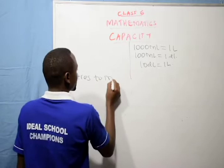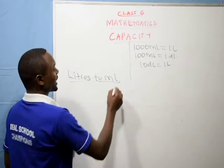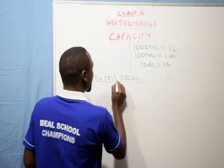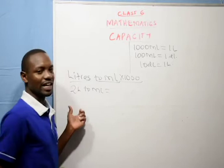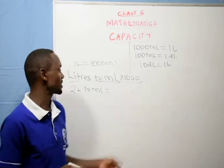To convert liters to milliliters, remember that 1,000 milliliters is equal to 1 liter. So when converting liters to milliliters, we multiply by 1,000. For example, convert 2 liters to milliliters: 2 times 1,000, which is 2,000 milliliters.